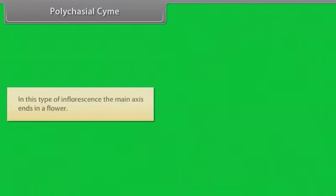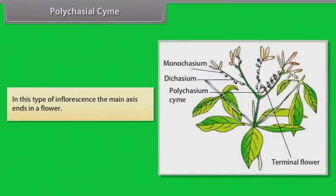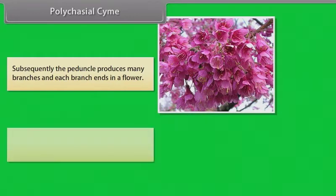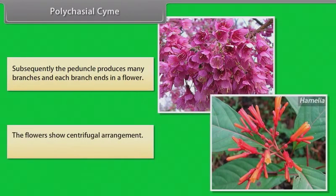In polychasial cyme, the main axis ends in a flower; subsequently the peduncle produces many branches and each branch ends in a flower. The flowers show centrifugal arrangement. Example: Hamelia.